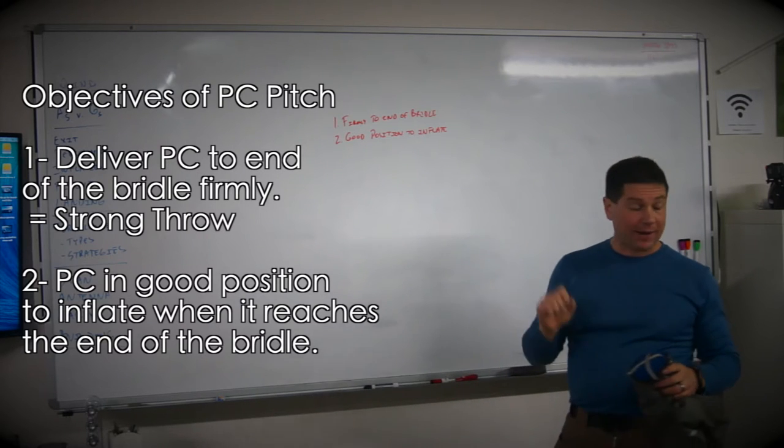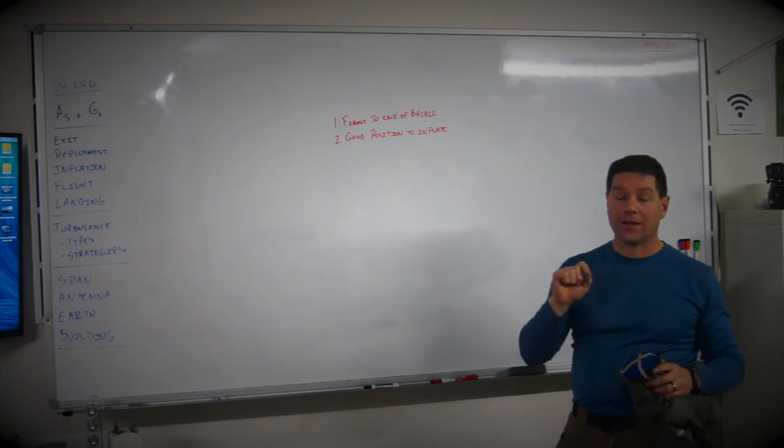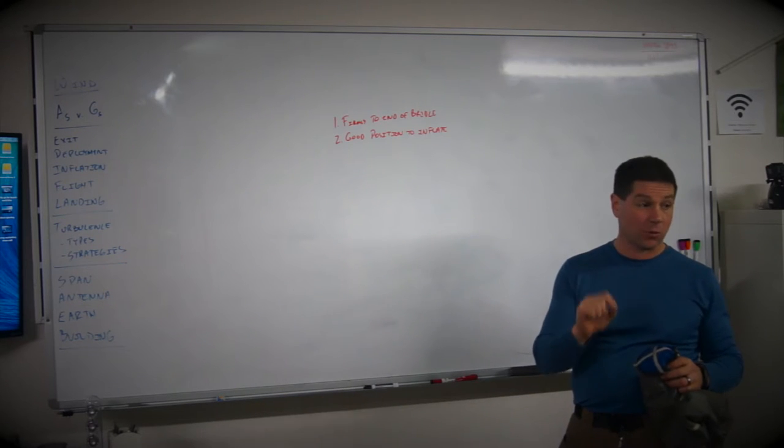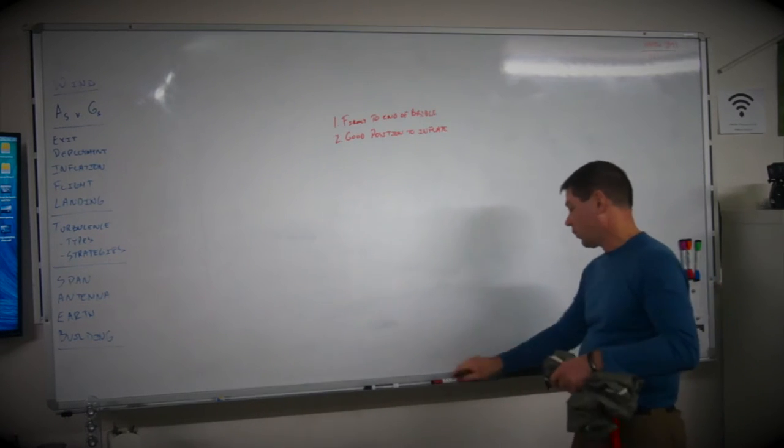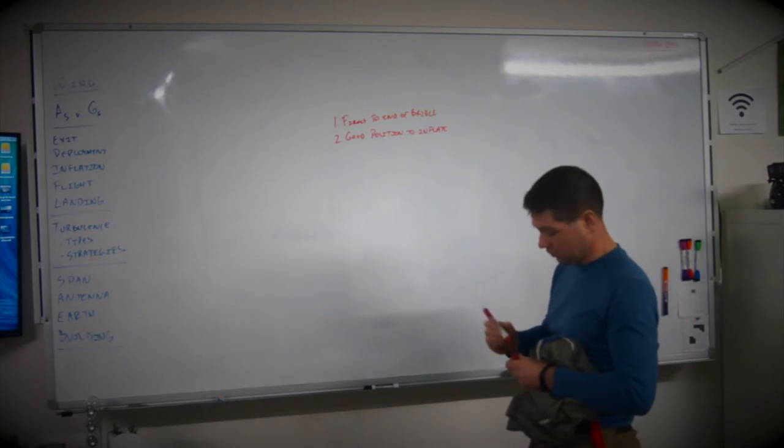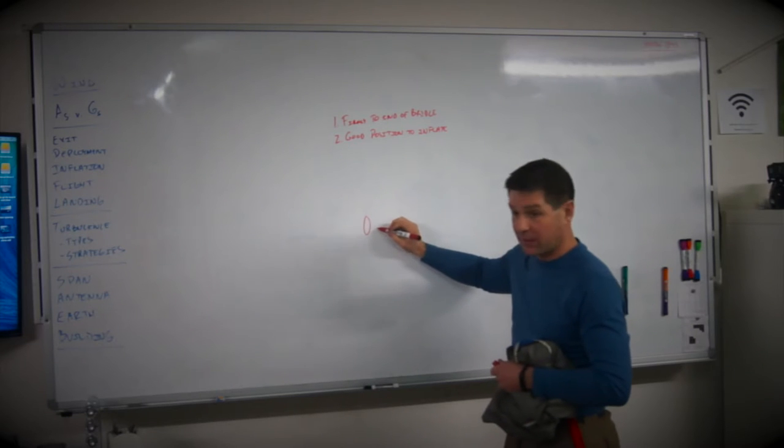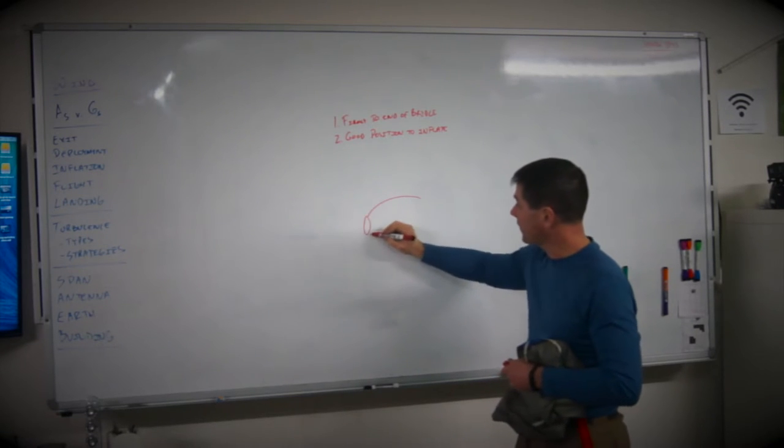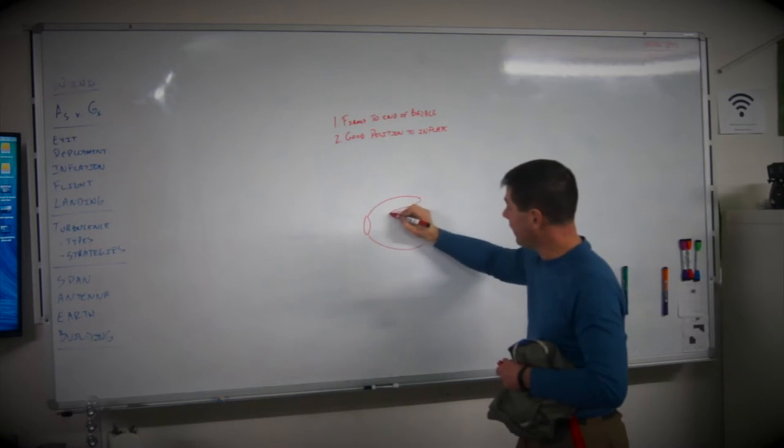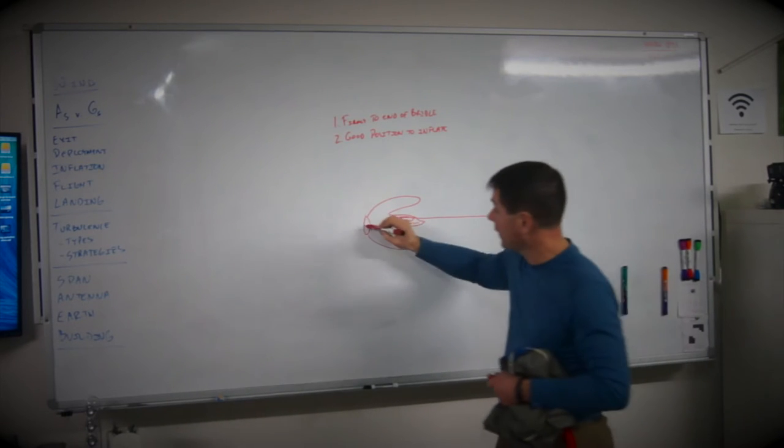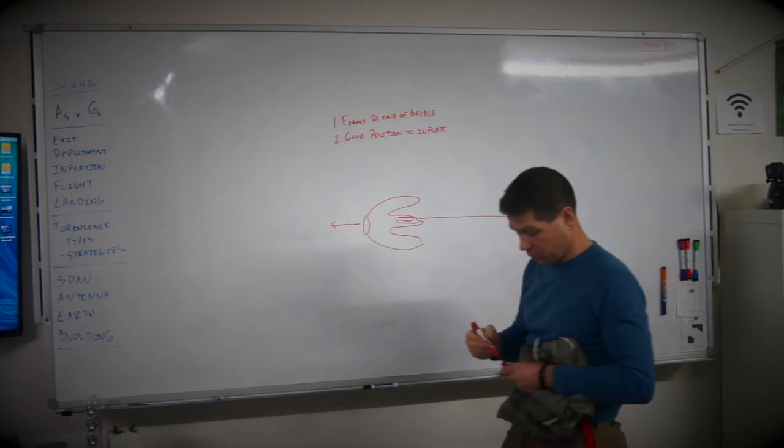That means a couple of things. It means you have to throw strong, but it means you have to throw in a good directed fashion, so the pilot chute moves to the end of the bridle in order. In general, that means I want to see the pilot chute travel like this. I should have the cap or the apex of the pilot chute, and then the ZP, and then the mesh, and then the bridle feeding out cleanly. The pilot chute should travel in this orientation all the way to the end of the bridle.